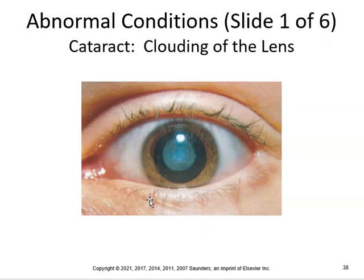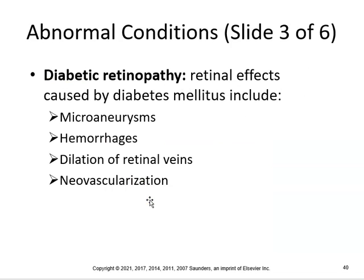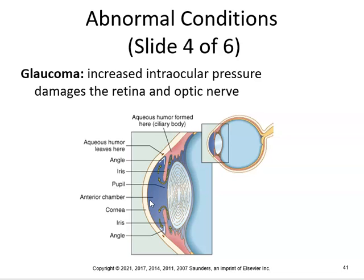A cataract is clouding of the eye's lens. A chalazion is a small, hard cystic mass on the eyelid, formed as a result of chronic inflammation of a sebaceous gland along the margin of the eye. Diabetic retinopathy involves retinal defects caused by diabetes mellitus — microaneurysms, hemorrhages, dilation of retinal veins, and neovascularization. Glaucoma is increased intraocular pressure that damages the retina and optic nerve — the treatment of choice is usually drops to decrease the pressure, reducing the aqueous humor buildup.